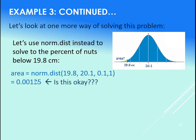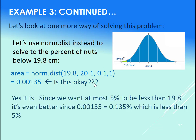So this is great. What that means is that only 0.00135 is the area below this x, or only 0.135% of the nuts have a diameter less than 19.8. That's great. That's way below the required 5%. So this is basically our percentage of defective nuts that we cannot use on the bolts that we have.